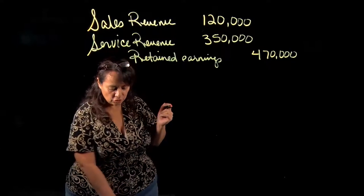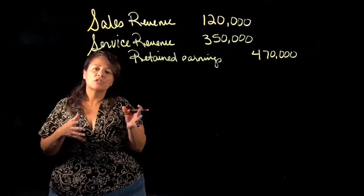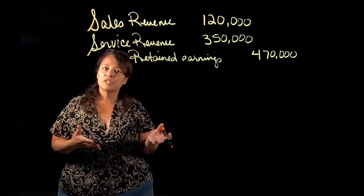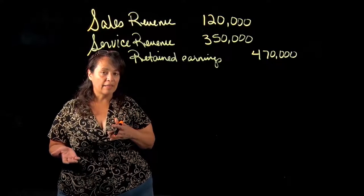Our second journal entry is so that we can close our expense accounts. Our expense accounts have a normal debit balance, so to close them we need to credit them.